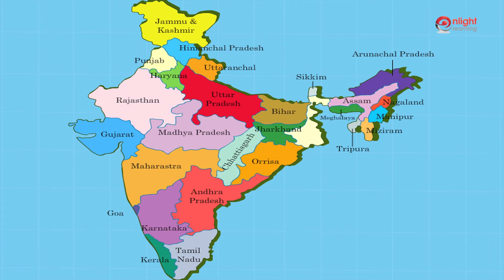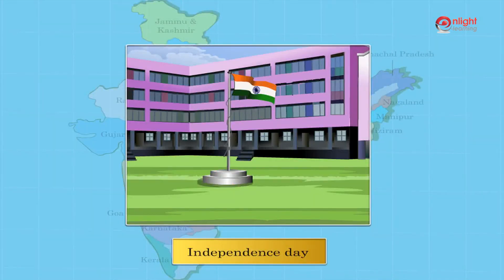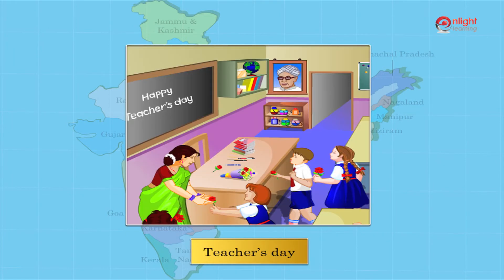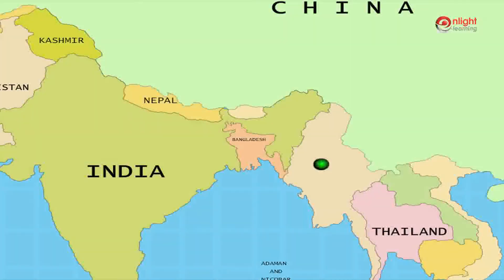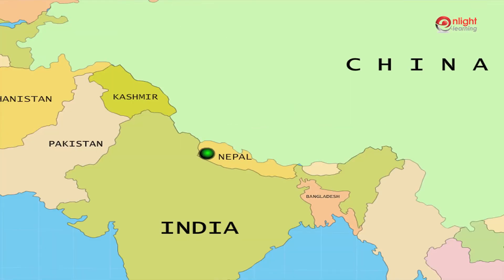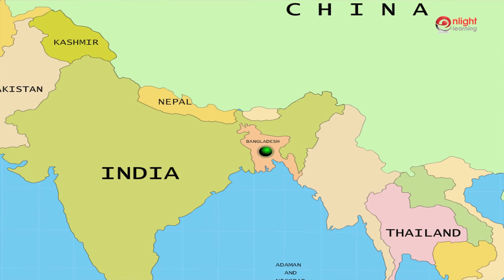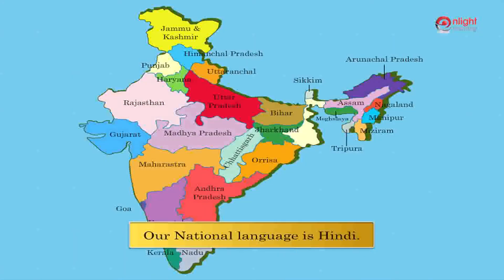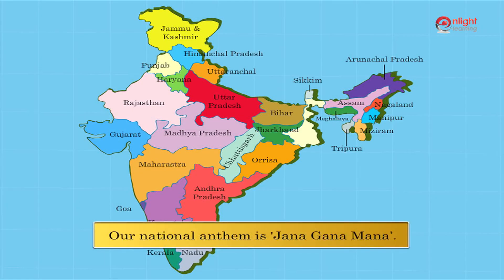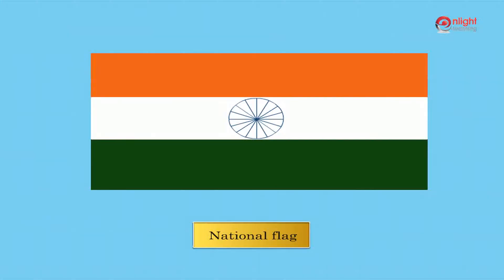In India, some important days are celebrated by the people of all communities together. Some of these important days are Independence Day, Republic Day, and Gandhi Jayanti. Pakistan, Burma, China, Nepal, Bangladesh, and Sri Lanka are its neighboring countries.